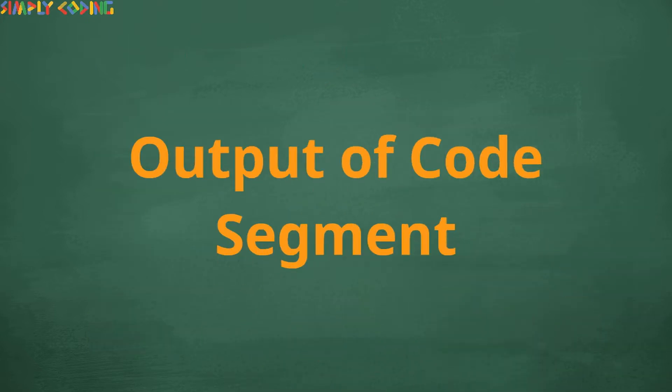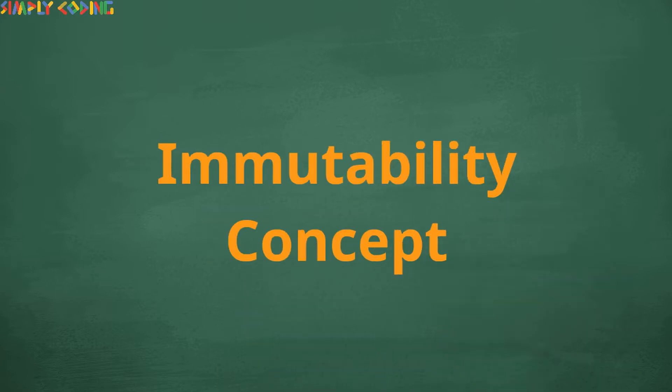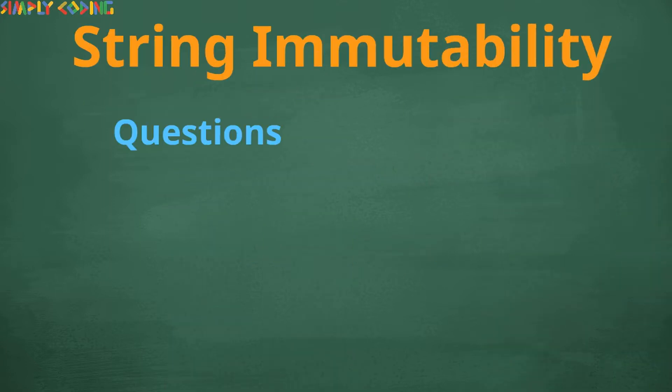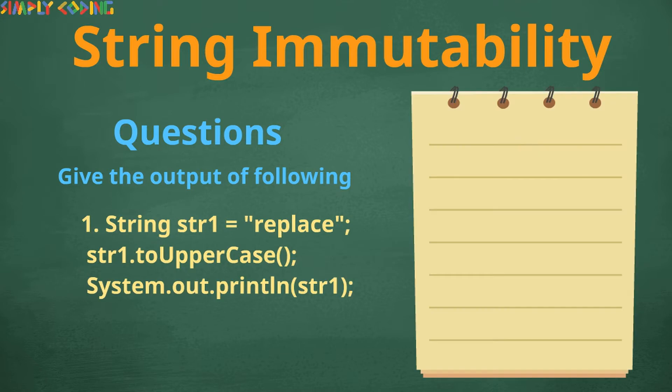Next are questions where a code segment is given and you are asked for the output. The first set is where you are tested whether you understand the immutability concept of string. You might be given a code sample like this where they will call either toUpperCase or replace or any of the methods which return string. The return value will not be captured and you would be asked the final value printed.